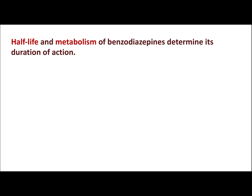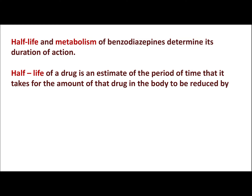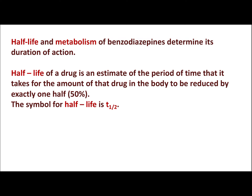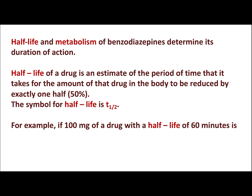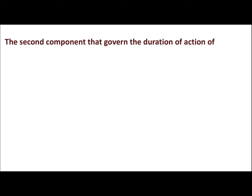There are two criteria which determine the duration of action of benzodiazepines: half-life and metabolism. Half-life of a drug is an estimate of the period of time it takes for the amount of drug in the body to be reduced by exactly one half — the symbol is t½. For example, if 100 mg of a drug with a half-life of 60 minutes is injected, after 60 minutes 50 mg of the drug remains in the body and another 50 mg has been eliminated.